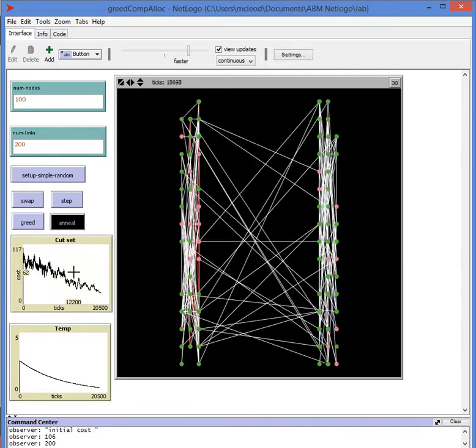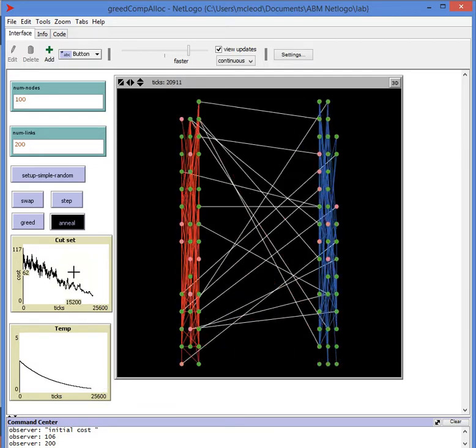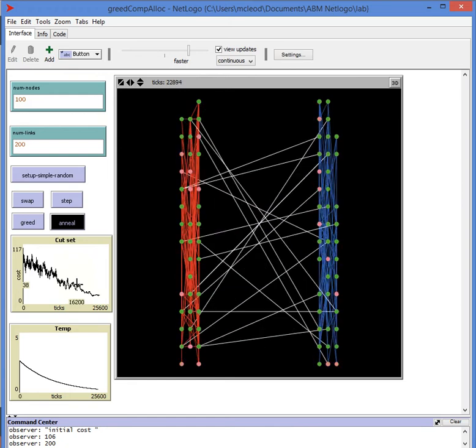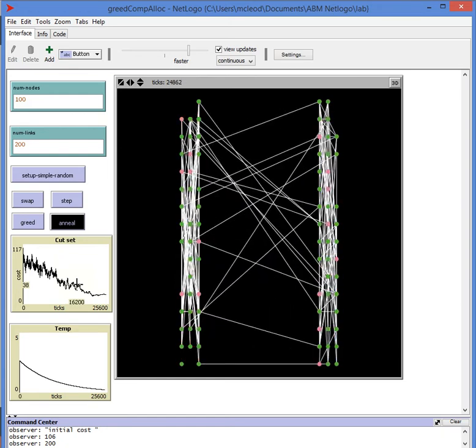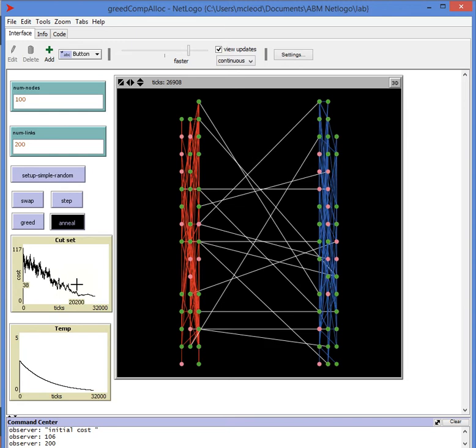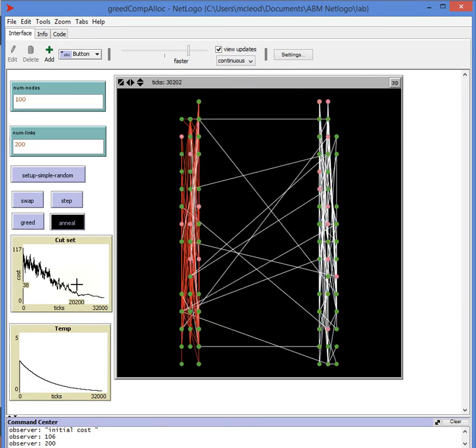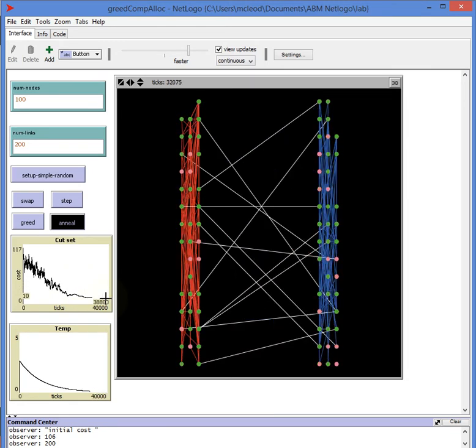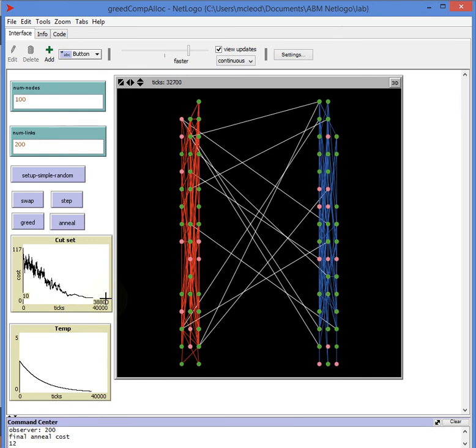But you can see over time, it's tending to optimize the cost function, and the variation in the solutions is becoming considerably less. And in this particular case, it looks like it's going to peter out at around 10, whereas the greedy approach gave us, I think, 36 interconnects.